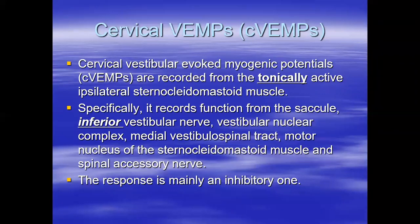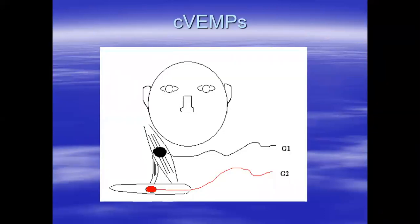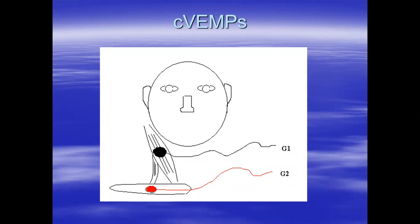The setup is simple — we only need three electrodes. We record first on one side and then on the other. Avoid recording both sides at the same time, because there is also a contralateral response that will interfere. Also avoid recording both types of vestibular evoked myogenic potentials at the same time.